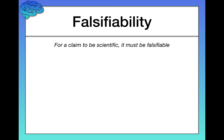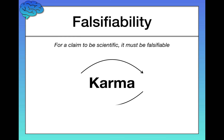For example, karma. Karma might very well be true — what goes around comes around, you do good things and good things happen to you, you do bad things and bad things happen to you. Very possible that this is actually the case. But based on our current scientific powers, we have no ability to really test this empirically. We can't design a study or experiment that does a good job of testing this, and therefore it is not a scientific claim.